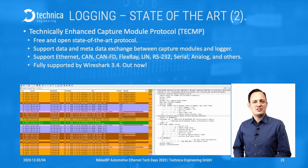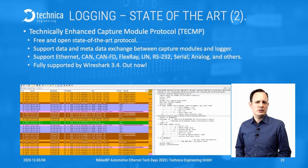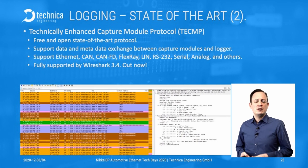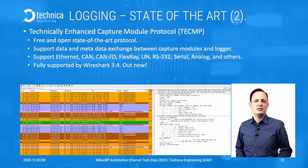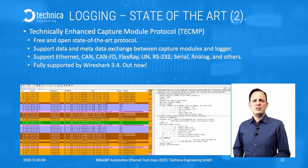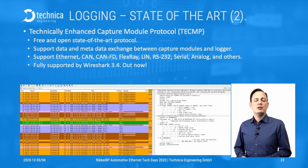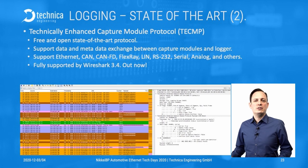Logging state of the art, part two. TCMP is the Technically Enhanced Capture Module Protocol — a free and open state-of-the-art protocol. It supports transporting logged or recorded data and the metadata attached to it: link quality, link up/down events, which link it is, direction, whether it's CAN and which CAN, and so on — transporting all that towards the logger. TCMP supports Ethernet, CAN, CAN FD, FlexRay, and many other technologies. And it's not only free and open — you can also get an open source implementation. With the new Wireshark release at end of October, version 3.4, it's already integrated. As soon as you open a trace file with TCMP in it, you can already see everything.